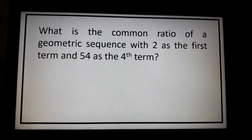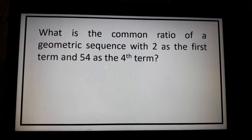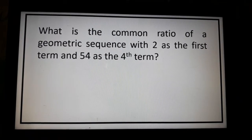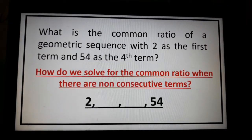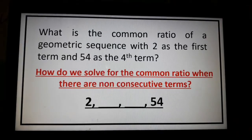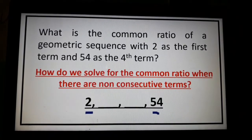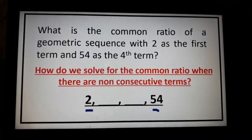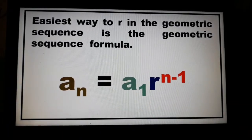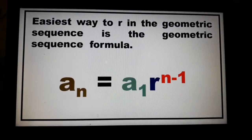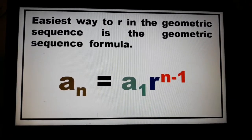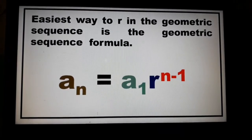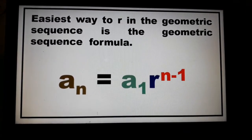Next problem. What is the common ratio of a geometric sequence with 2 as the first term and 54 as the fourth term? In this sequence, we only have 2 as our a sub 1 and 54 as our fourth term — there are no consecutive terms. When there are non-consecutive terms, the easiest way to find R is to use the geometric sequence formula: a sub n equals a sub 1 times R raised to the power of n minus 1.